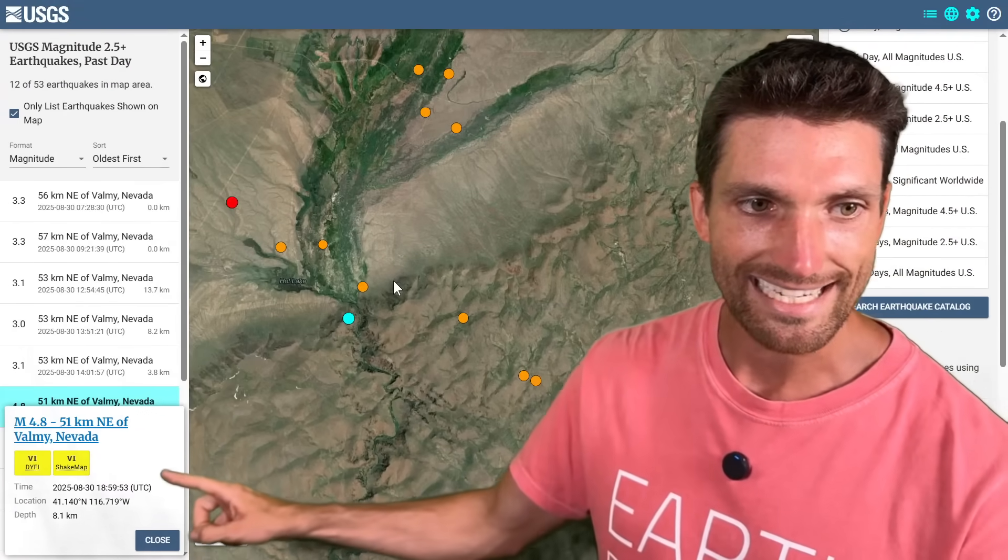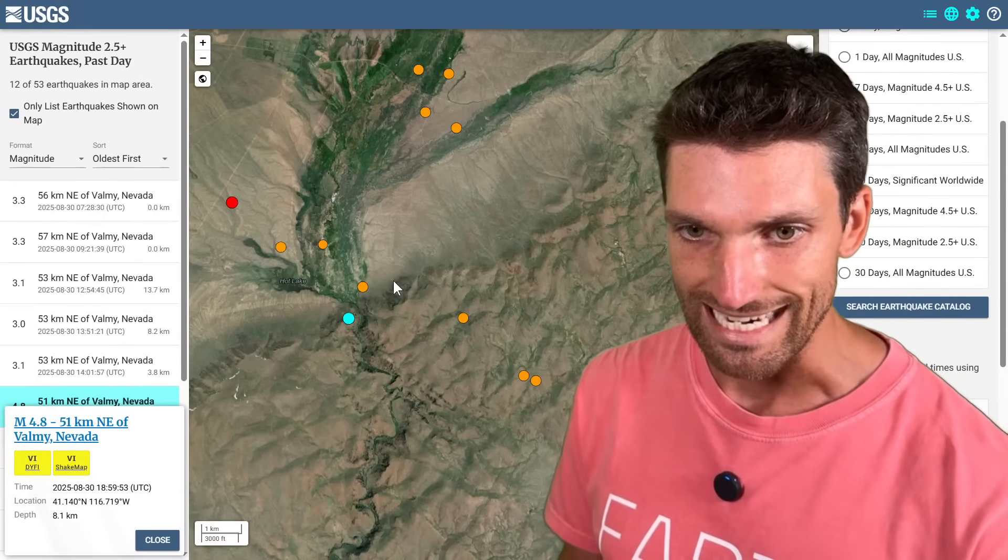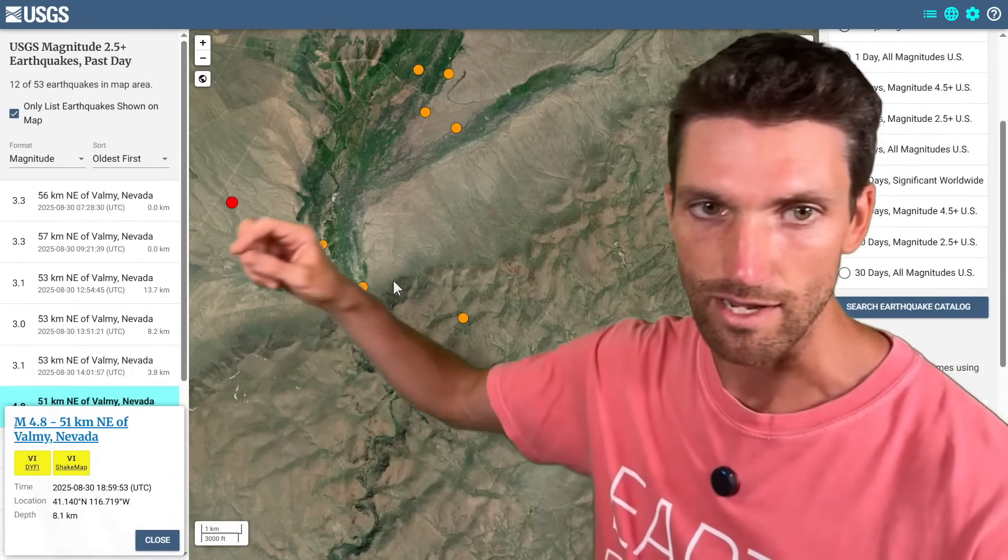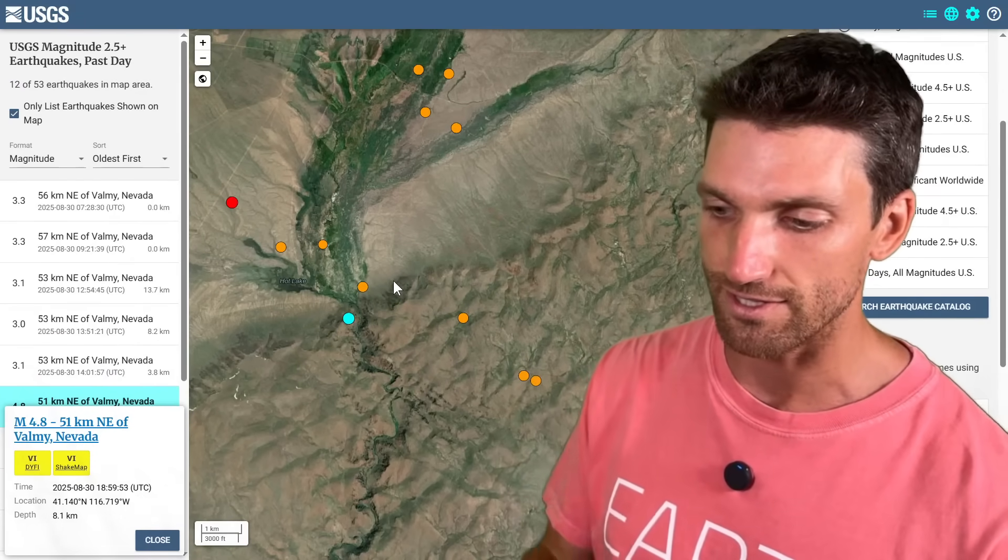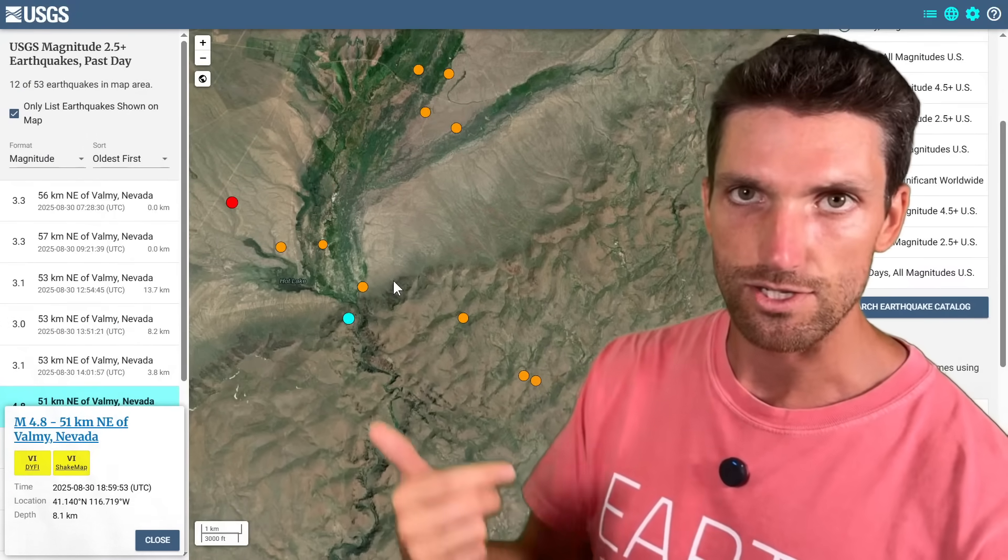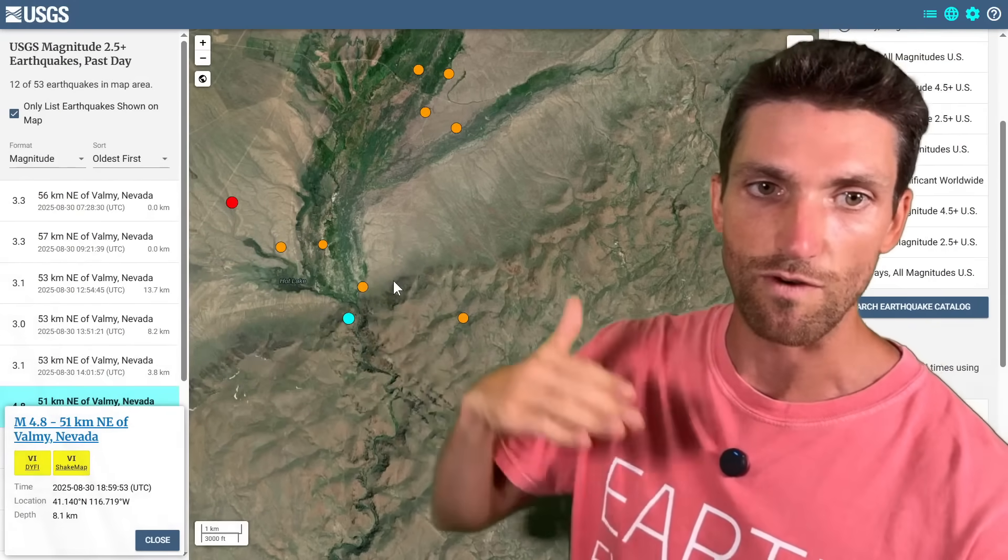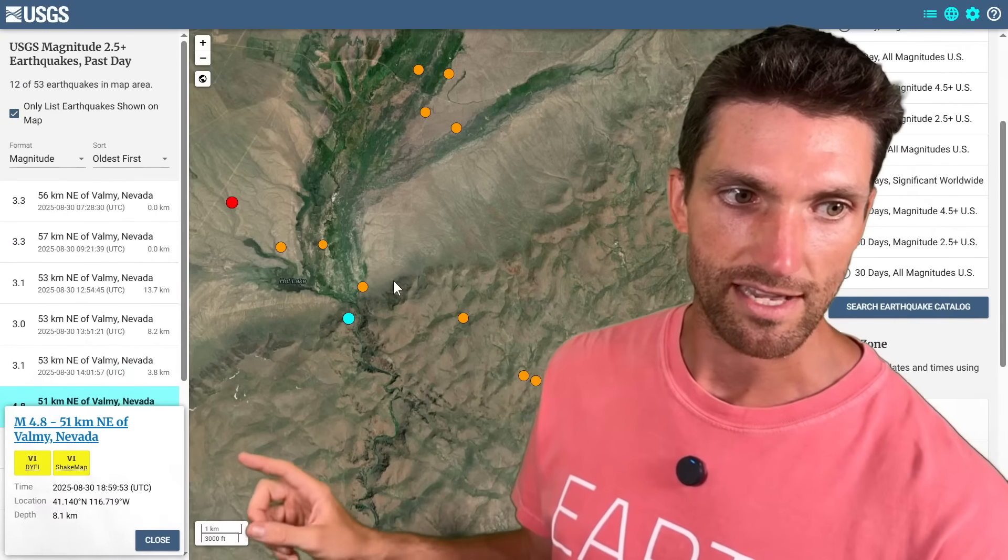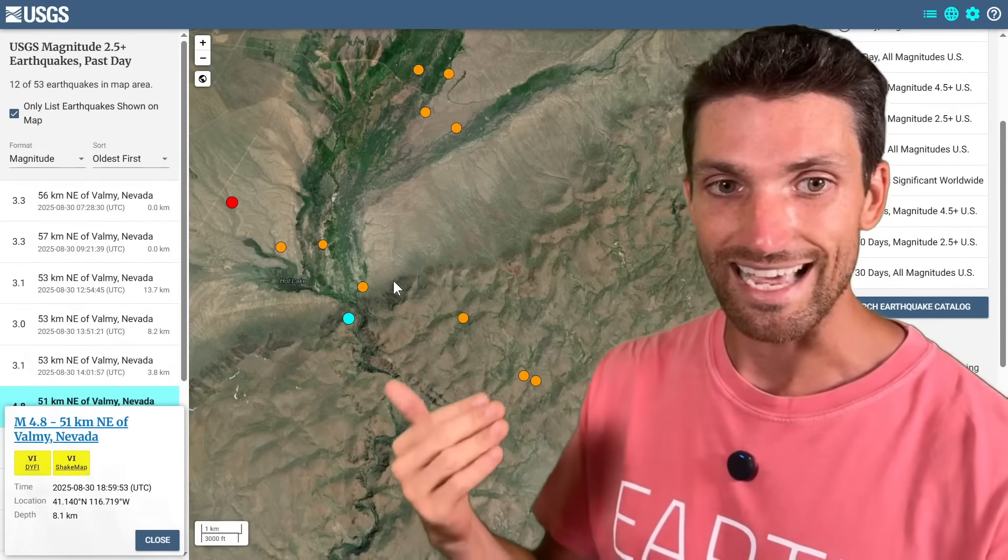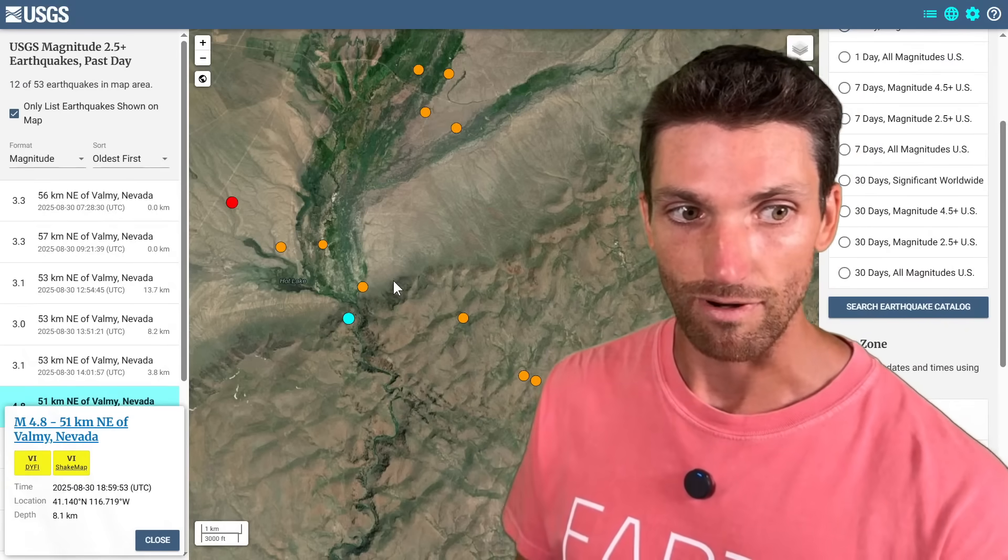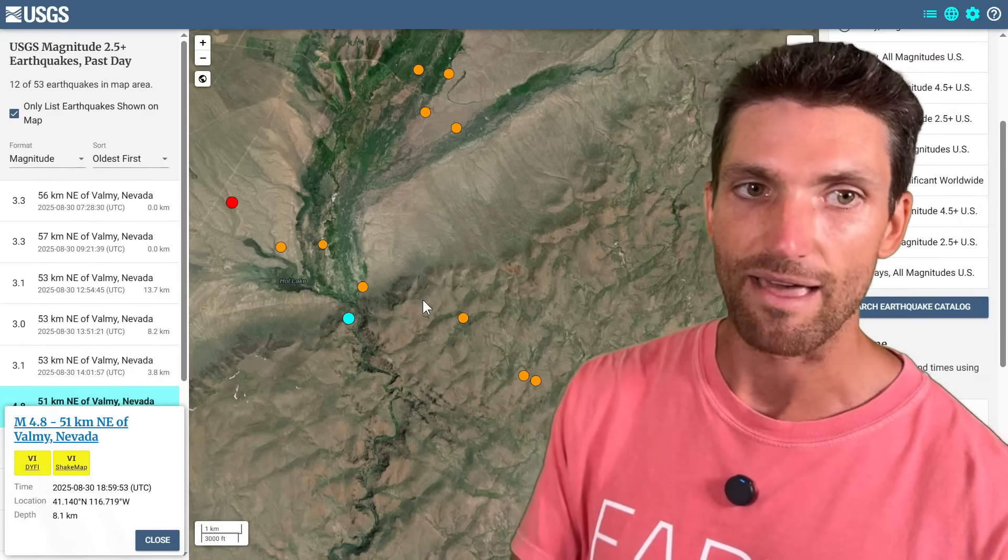So that was at 1859 universal time, basically 1859:53. So let's call it 1900 universal time on the dot. California is UTC minus seven because the east coast is UTC minus three, move over three more hours, UTC minus seven. That makes it 1900. That makes that exactly at noon, right 12 p.m., right at noon we had that magnitude 4.8. The sun was directly overhead.